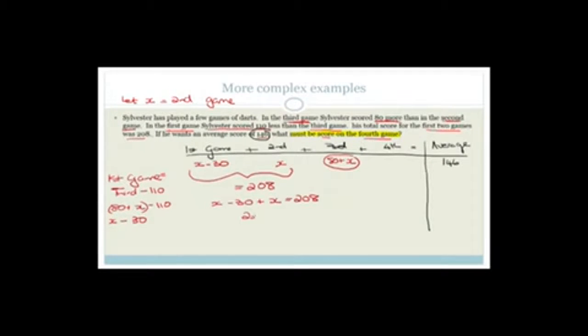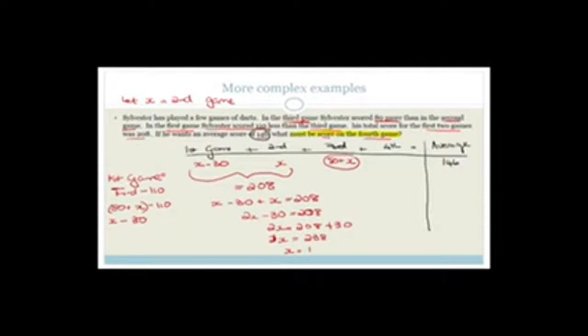Right now we could solve for X because we've got X minus 30 plus X equals 208. So if we've got two X minus 30 is equal to 208, therefore, two X is going to be 208 plus 30 because remember you take it across it becomes a plus. So two X is equal to 238. So X is going to be 119. So this becomes easy because we're going to let the fourth game be Y, just so that it's not X, right?